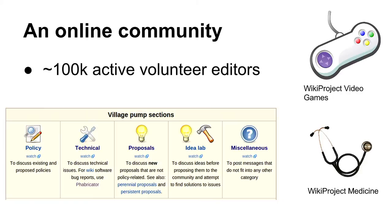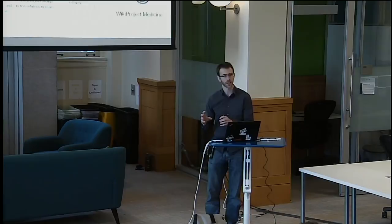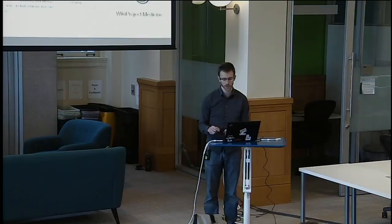Wikipedia is also an online community. There are about 100,000 to 110,000 active editors. They have forums — the village pump sections are the main forums for English Wikipedia, covering policies, technical issues, new proposals, and an idea lab for proposals that might need engineering resources. There are also subject-matter focused groups like WikiProject Video Games and WikiProject Medicine.